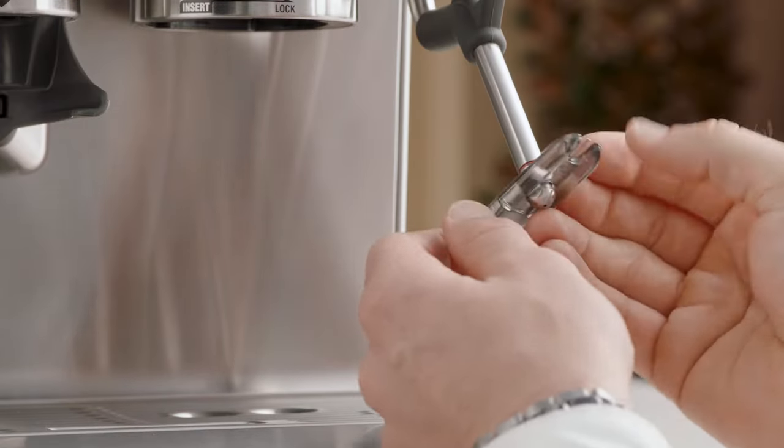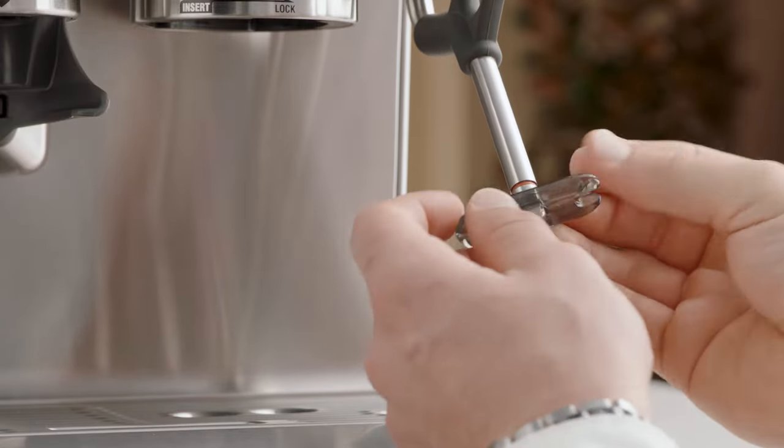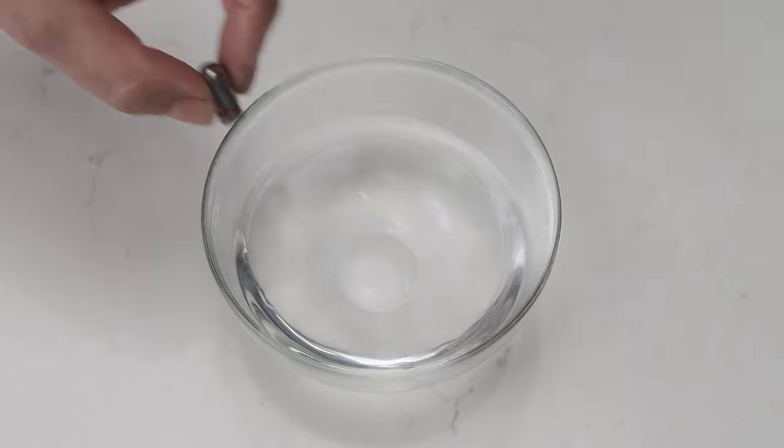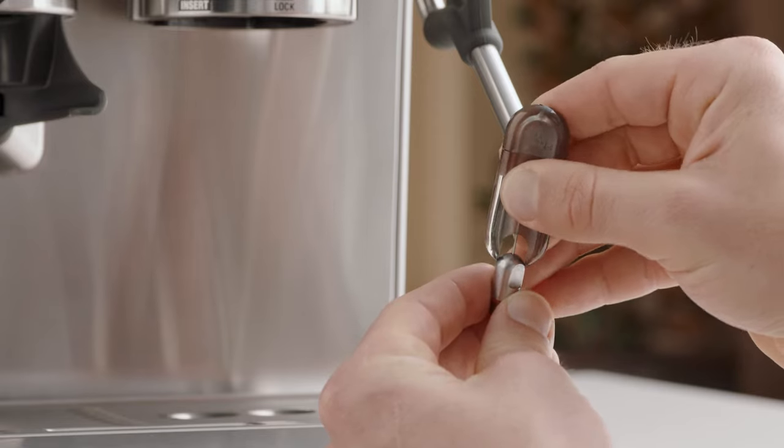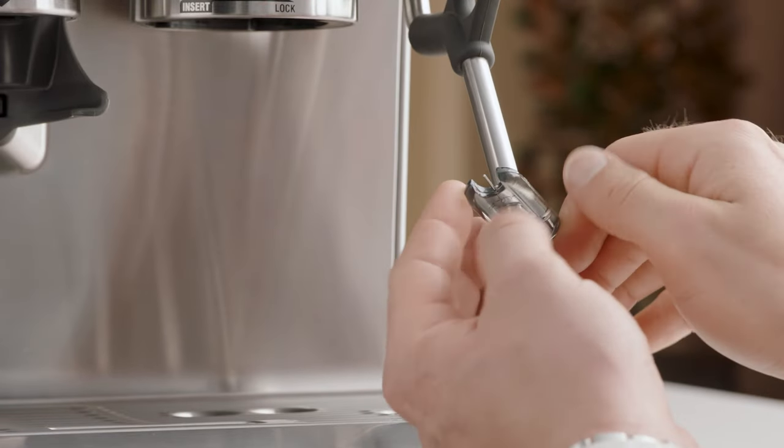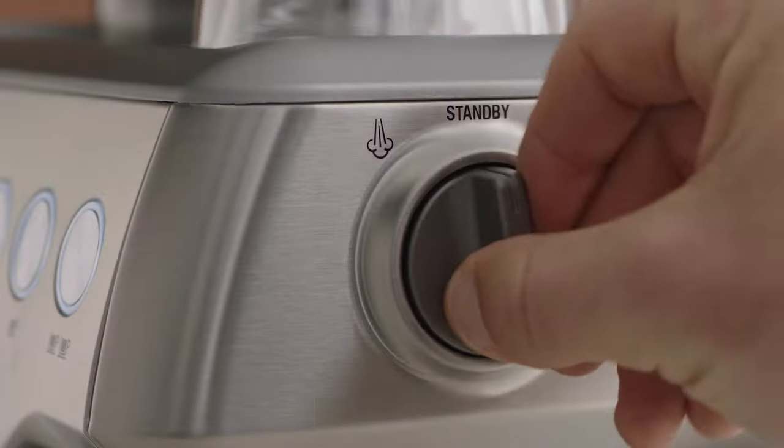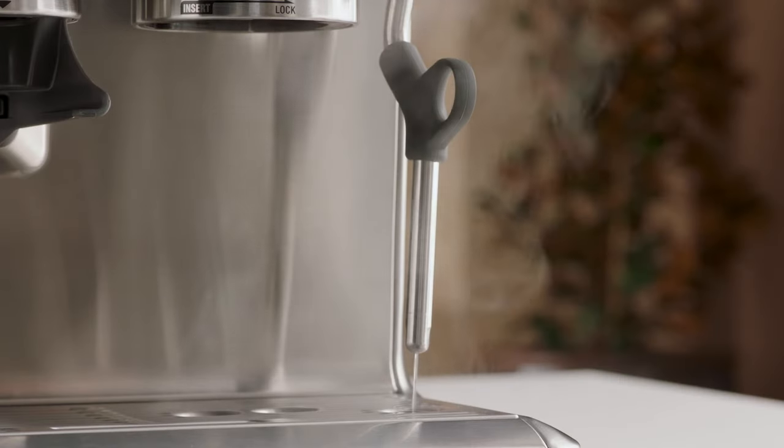To unlock, use the spanner in the middle of the steam wand cleaning tool to unscrew the tip. Soak the tip in hot water before using the cleaning tool to unblock. Then replace the tip back onto the steam wand. Then turn the steam dial to the steam position to purge the steam wand after cleaning.